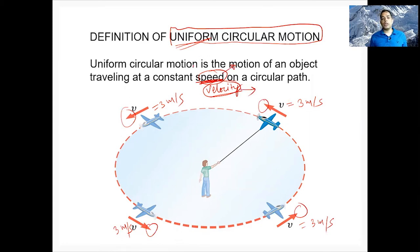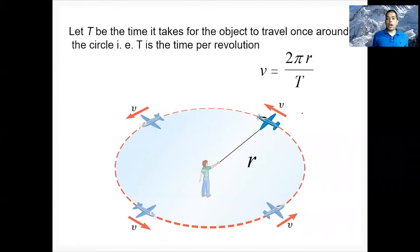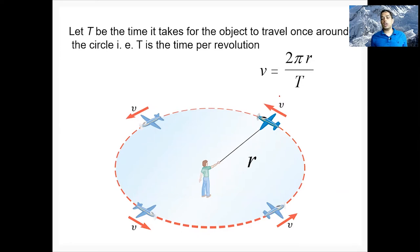In uniform circular motion we say speed is constant, not the velocity. Now I'm going to derive how to find the speed in uniform circular motion. Speed — let's call it v — and speed is constant.